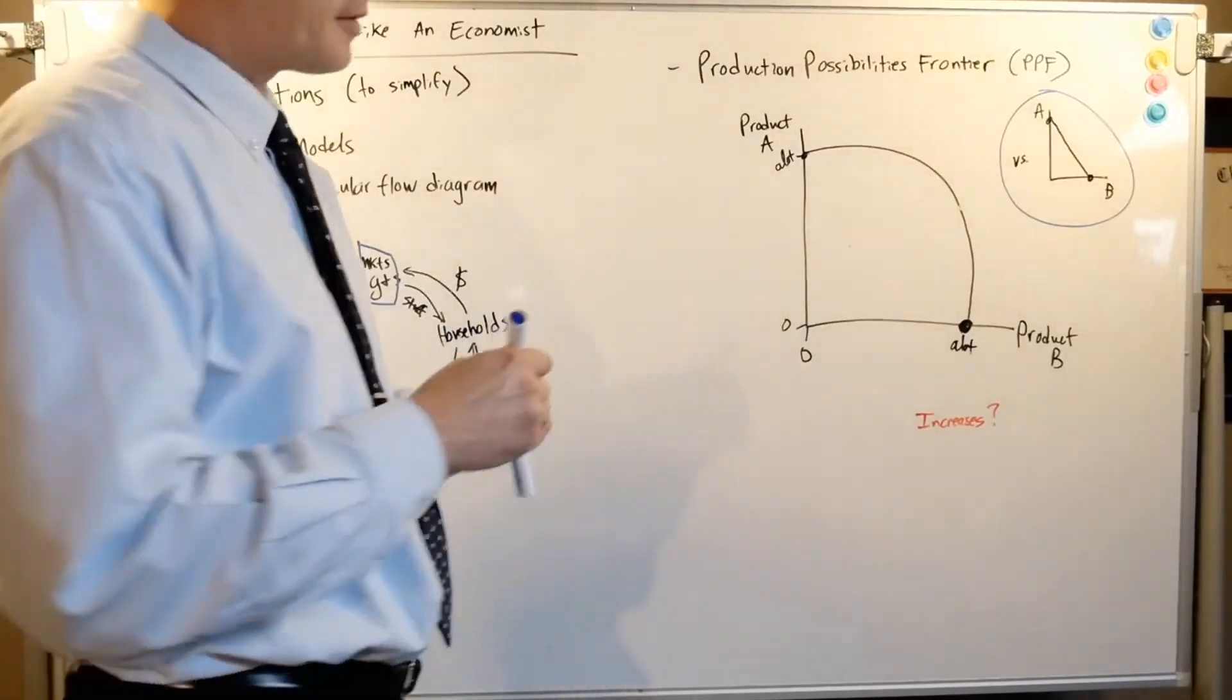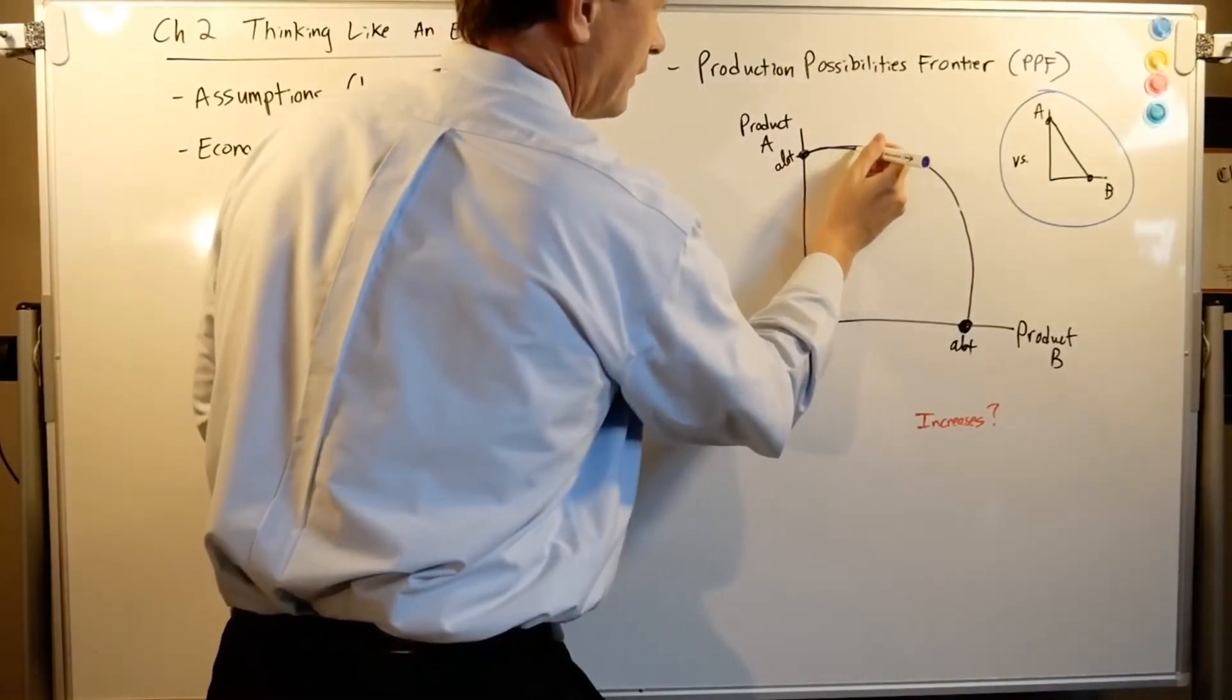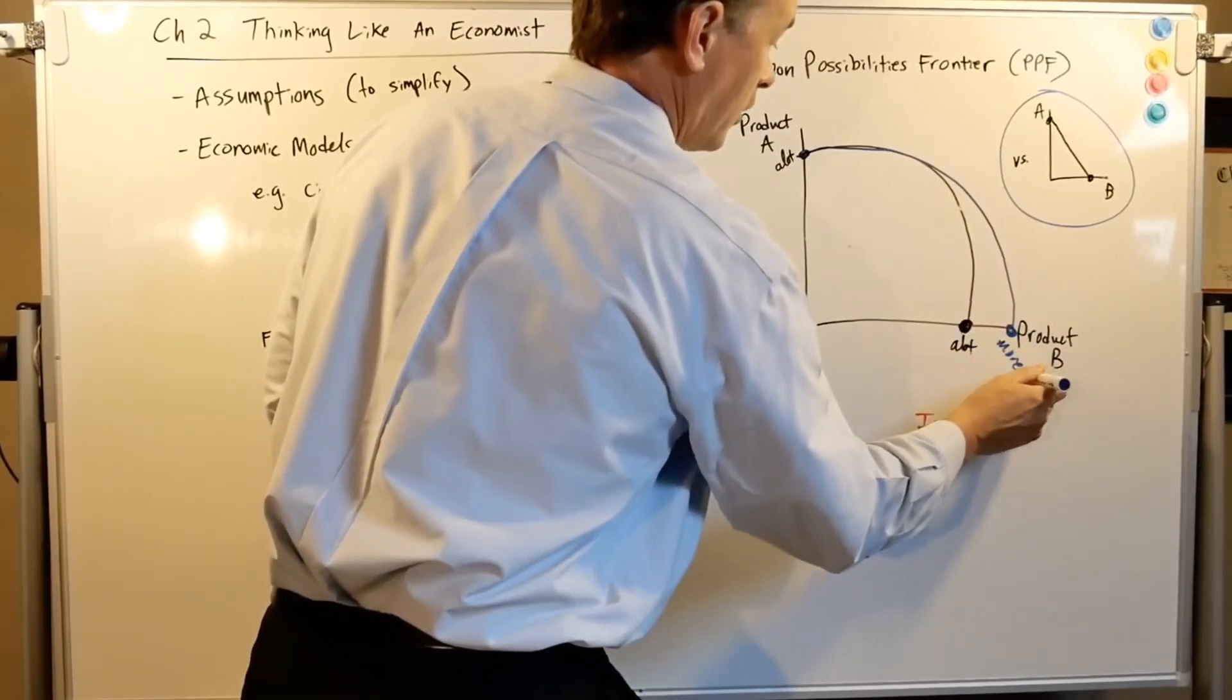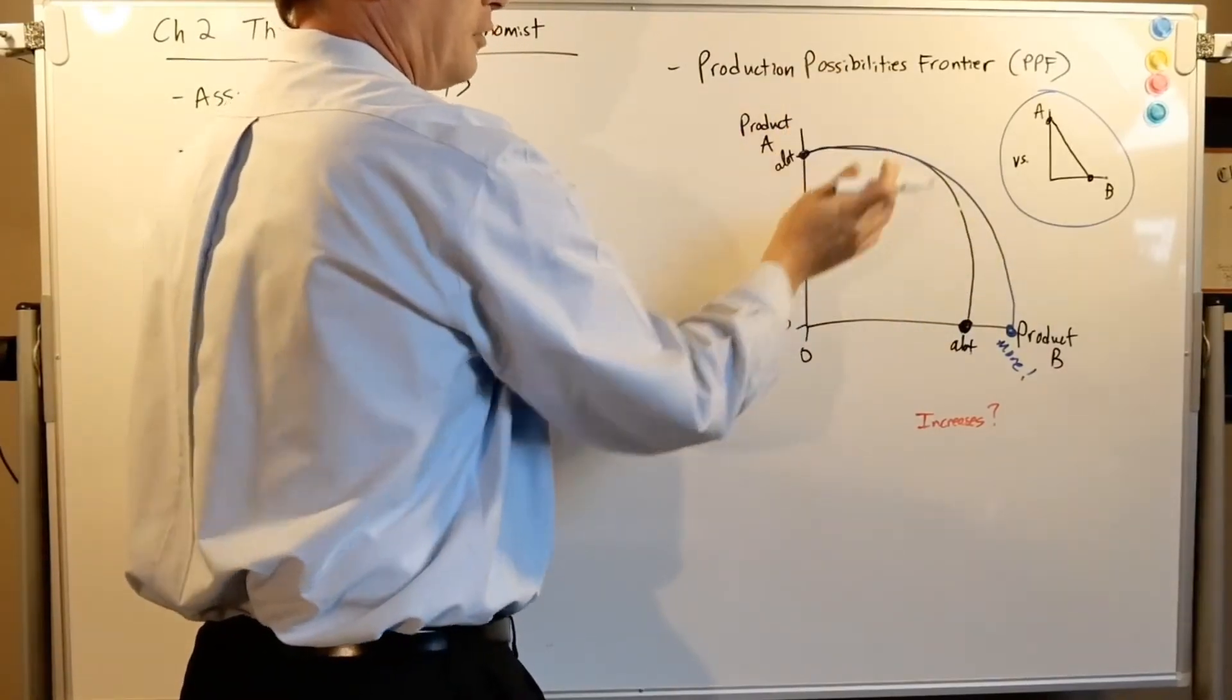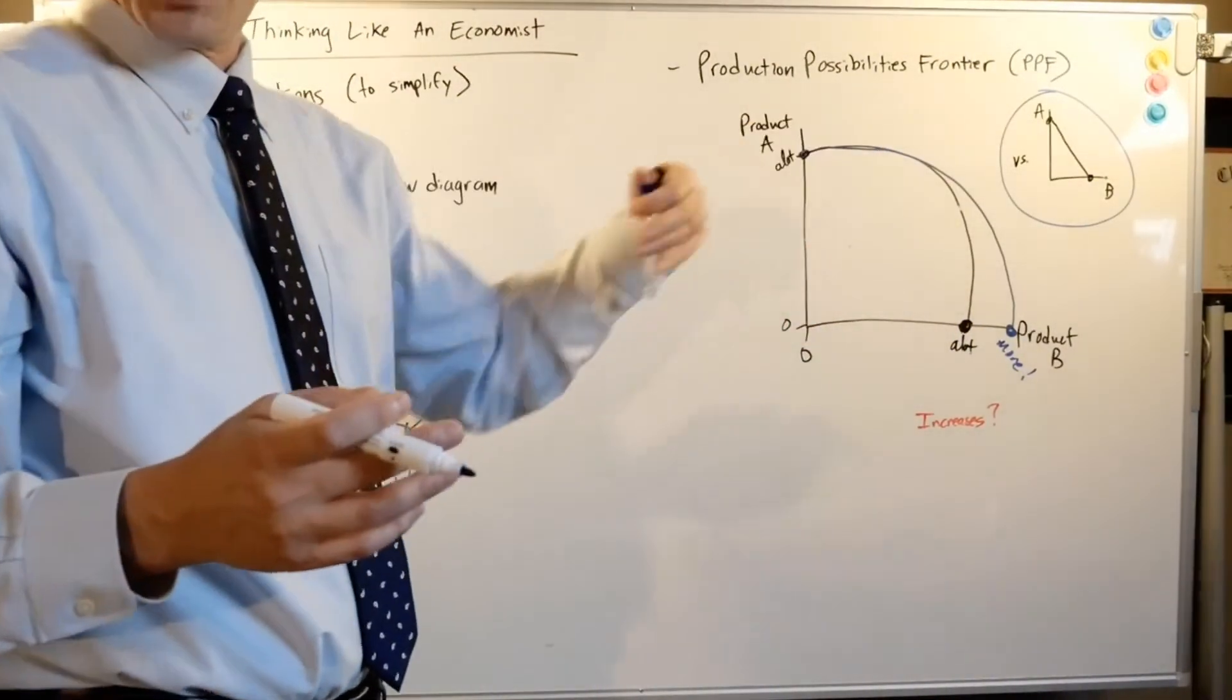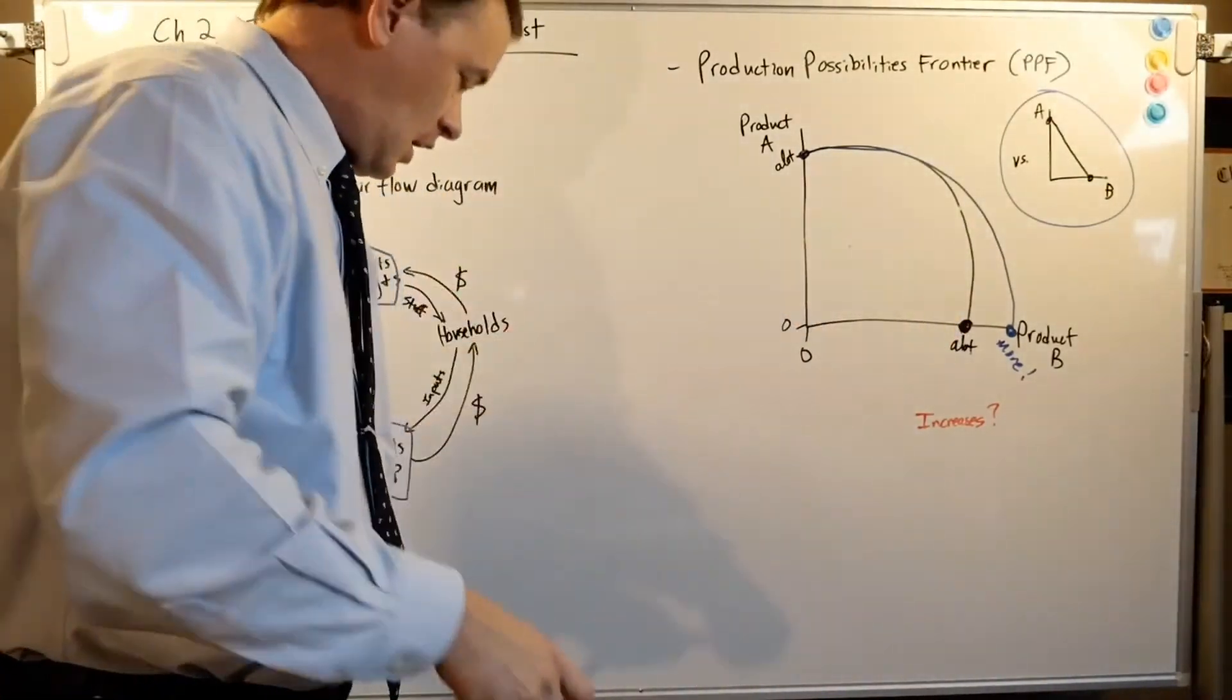What if there's some sort of gain in technology, some technology that allows you to make say more of product B? Well guess what, that changes our production possibilities frontier. Let's say product A - the gain in technology doesn't really help it, so it stays there. But product B we can make more. Okay, so this line can shift. Now if it shifted on both, it improved the production of both, so you can see this line moving. Now if you had some sort of loss or something you can see it retract as well, but generally speaking we're looking at economic growth, we want to see growth like that.